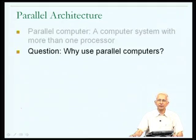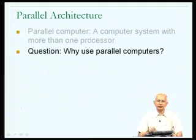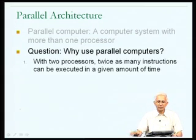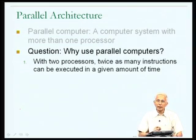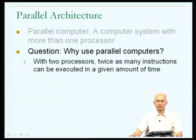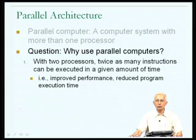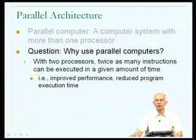Why use parallel computers? There are two reasons. First, if you have at least two processors and write a program which runs on the parallel computer using both processors, your program should be able to run twice as many instructions in a given amount of time compared to a single-processor computer. There are two separate processors, each with a separate program counter, each of which can fetch and execute instructions. In general, the more the processors, the more instructions can be executed in parallel, and therefore the faster our programs will run.